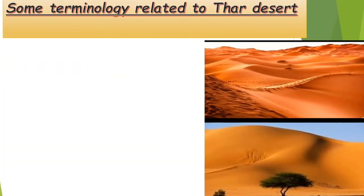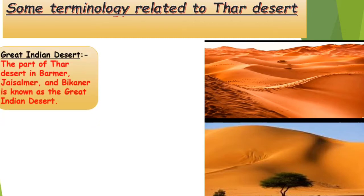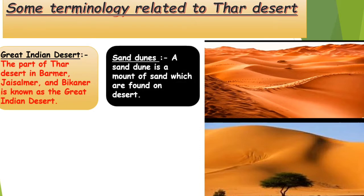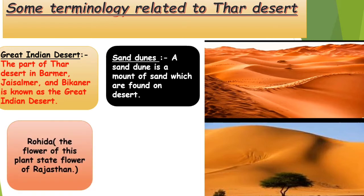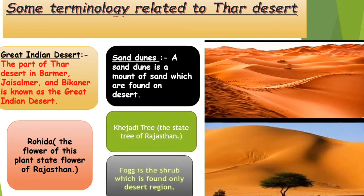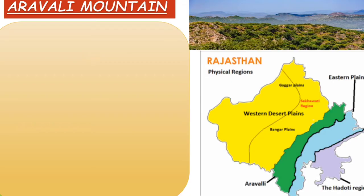There are some terminology related to the Thar Desert. Number one: Great Indian Desert — the part of the Thar Desert in Barmer, Jaisalmer, and Bikaner is known as the Indian Desert. Number two: Sand Dunes — a sand dune is a mound of sand found in the desert. Rohida is the state flower of Rajasthan. Khejdi tree is the state tree of Rajasthan. Fog is a shrub found only in desert regions.